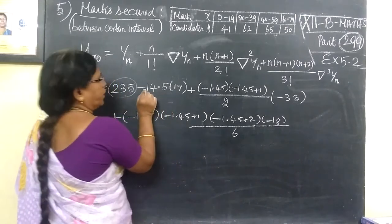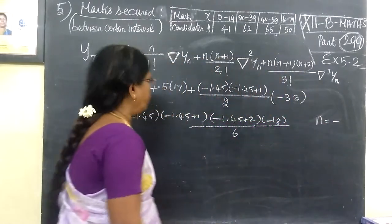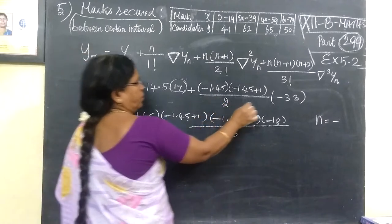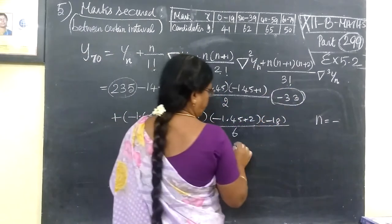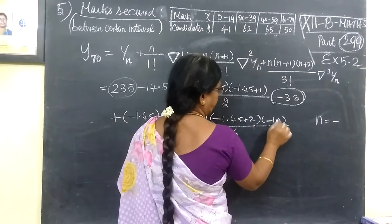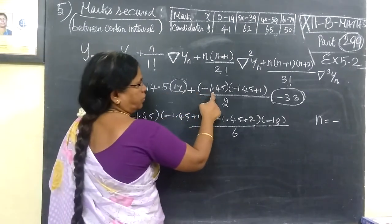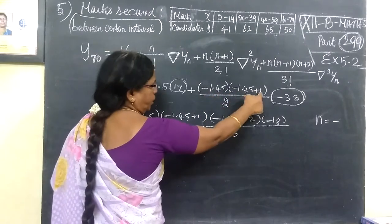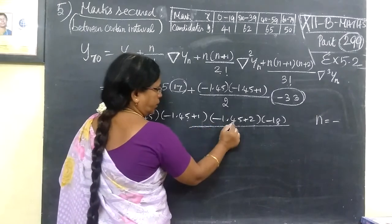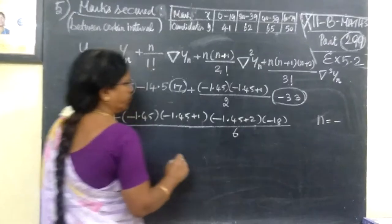This is 235. This is 235. This is 1. In the beginning there are values of minus. It is left equal to the table. In the minus 18, actually the table is left equal. Here is the following: n into n plus 1, then n plus 1, then n plus 1, then n plus 1, then n plus 2. Now we will simplify it for 4.